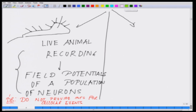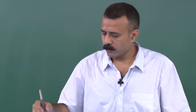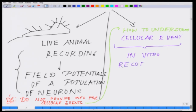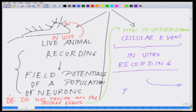This takes us to the next level — how to understand cellular events. For cellular events, you need what we call in vitro recording, as opposed to in vivo or in-animal recording. In the next slide we are moving to the different techniques of in vitro recording.